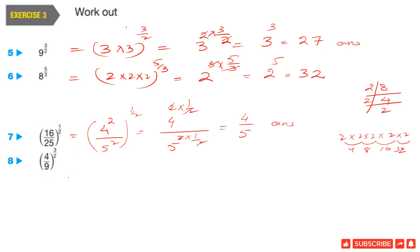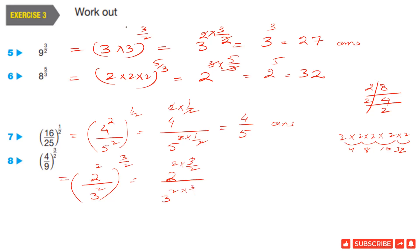Question 8: (4/9) power 3 by 2. We know 4 is the square of 2 and 9 is the square of 3, so we rewrite as 2 power 2 upon 3 square, whole power 3 by 2. Applying the same formula as question 7, we separate to get 2 power 2 times 3 by 2, over 3 power 2 times 3 by 2. These cancel, leaving 2 power 3 upon 3 power 3, which is 8 upon 27. This is the simplest form and the answer for question 8.